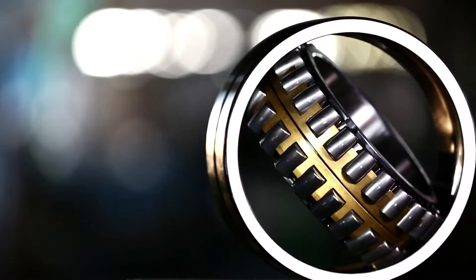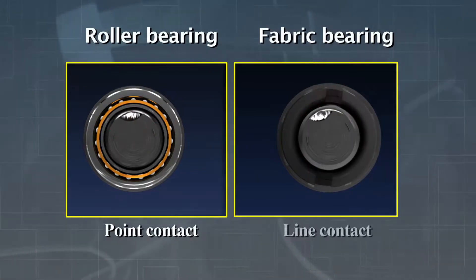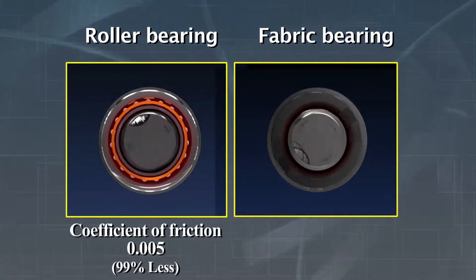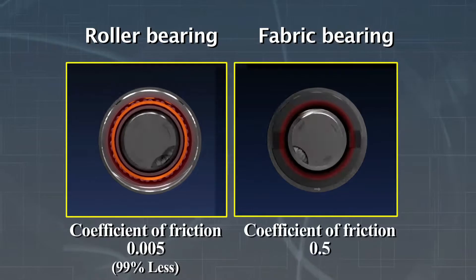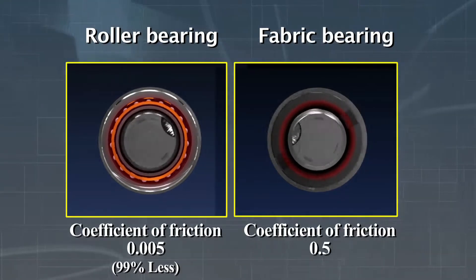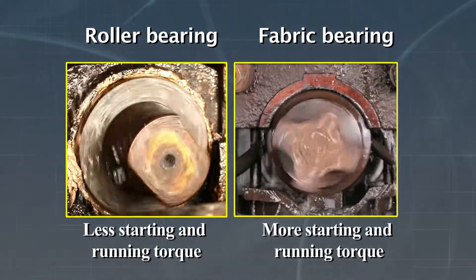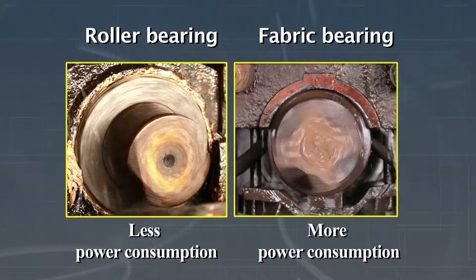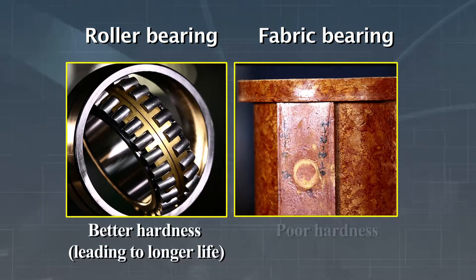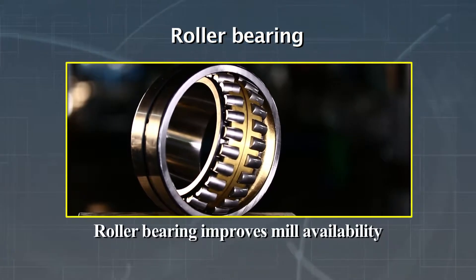The advantages of roller bearings are: rollers are subjected to point contact as compared to line contact in fabric bearing. Coefficient of friction for rollers is 0.005 compared to 0.5 for fabric, leading to less friction and heat. Rollers are subjected to less starting and running torque compared to fabric bearing, leading to less power consumption. Hardness of steel bearing is far better than fabric bearing, leading to longer life. Roller bearing improves mill availability.